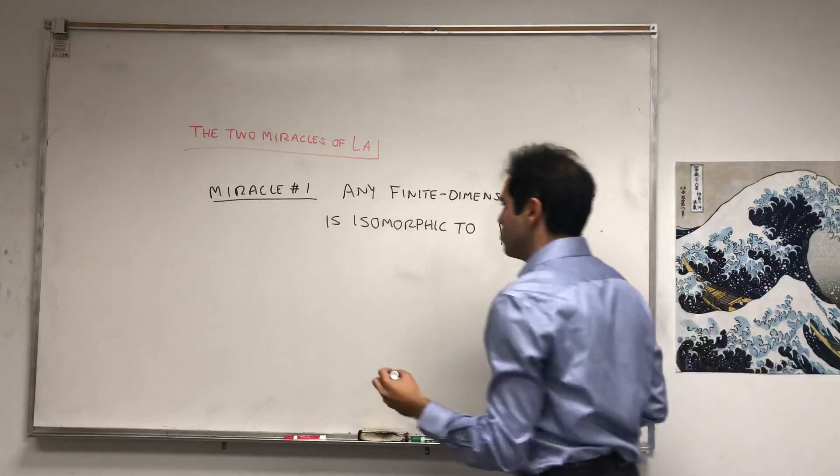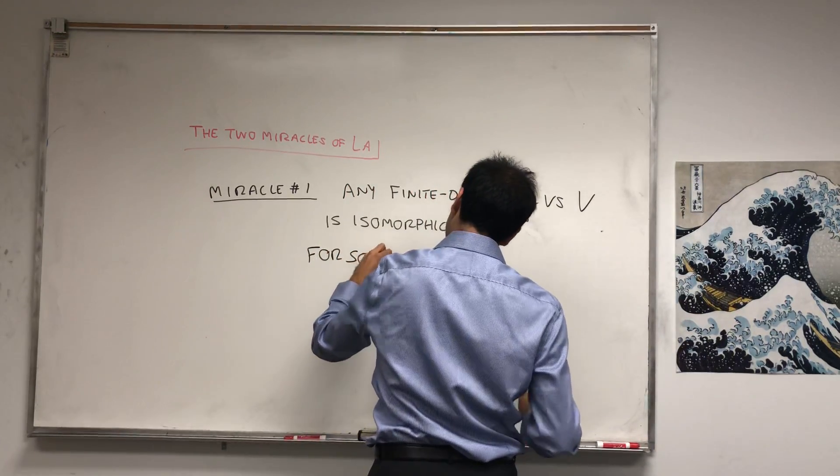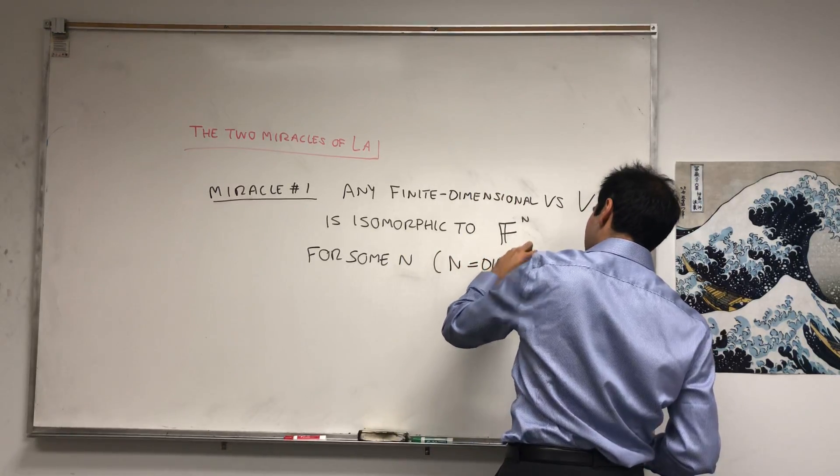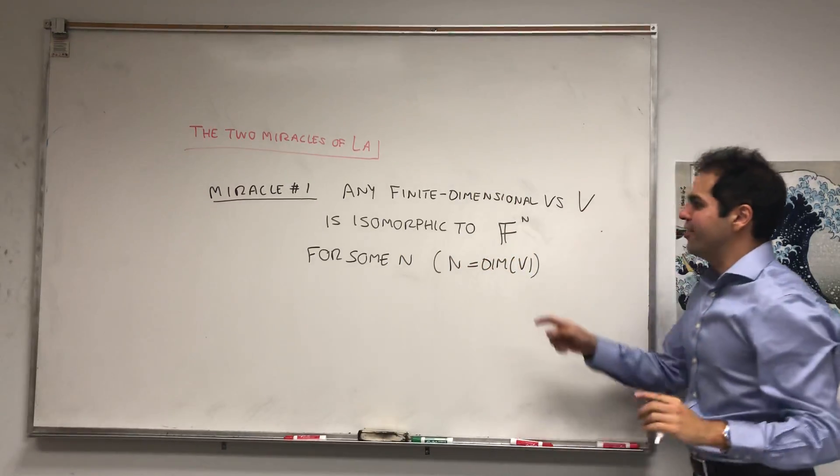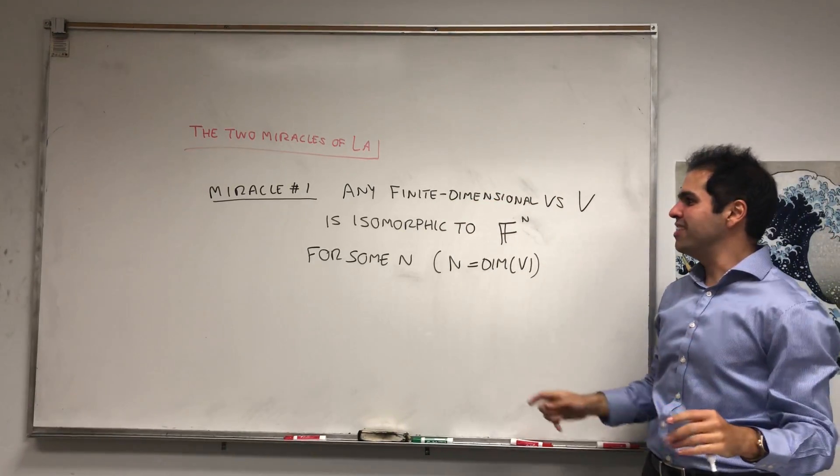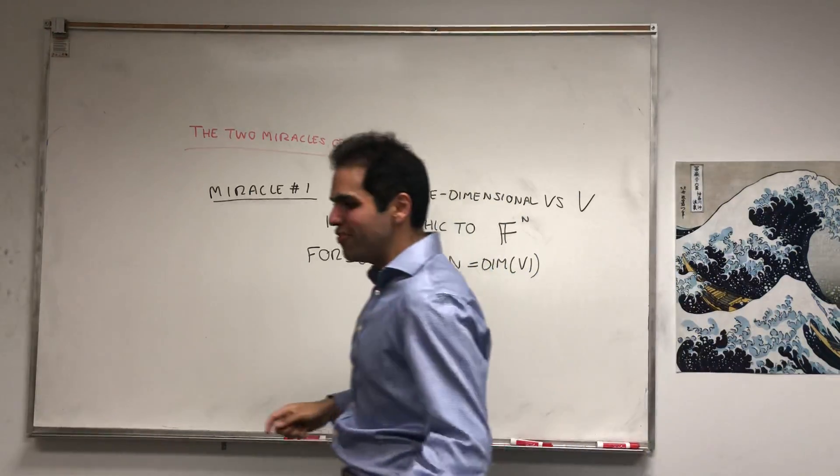Namely, N is the dimension of V. Okay, weird word I said: any vector space V is isomorphic to F^N. So what does isomorphic mean? It means kind of the same.